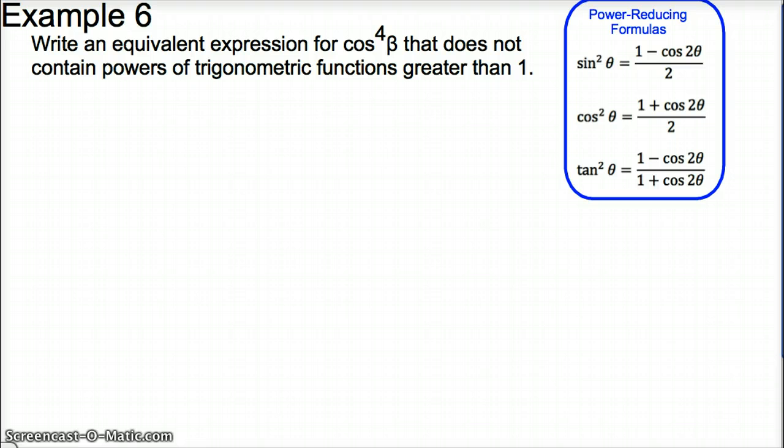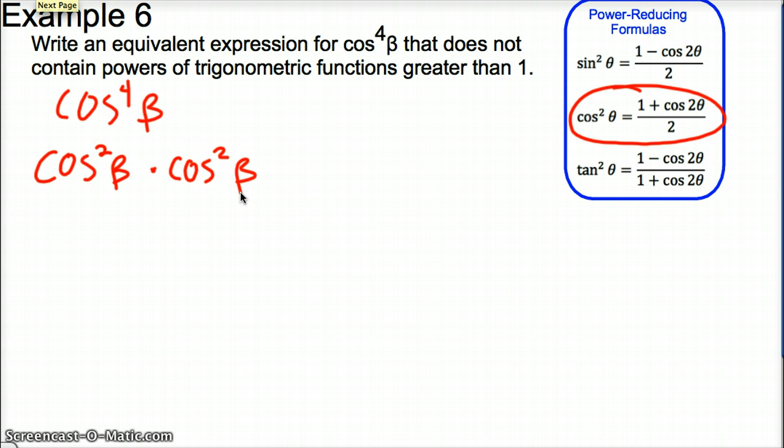So my goal for this problem is to write an equivalent expression for cosine to the fourth beta that does not contain powers of trigonometric functions greater than one. This is really important for solving equations. So I take a look at cosine to the fourth, but I only have a power reducing for cosine squared. So I'm going to start by taking my cosine to the fourth beta and understanding powers, I can separate this into cosine squared times cosine squared beta.